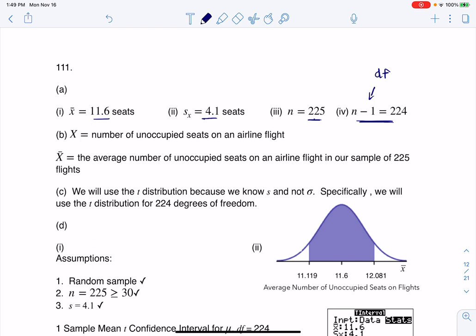So part B says define your variable, and then define x bar as well. On any individual flight, I'm keeping track of the number of unoccupied seats. You see right here I put on an airline flight. But if we think about this over the 225 flights, x bar is the average number of unoccupied seats in our sample of 225 flights. I really want to stress here that this was the average of your sample. That's why we're on a sampling distribution, whereas this was just one flight at the population level.